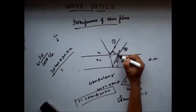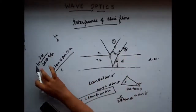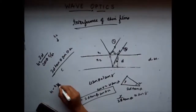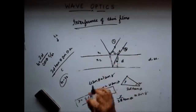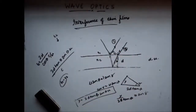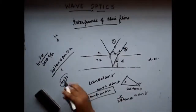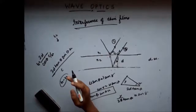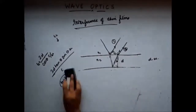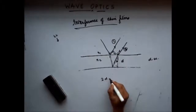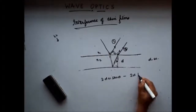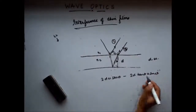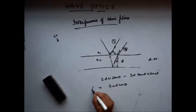The time delay is t1 minus t2, which is the difference in time taken by the two light waves. If I multiply this time with the velocity of light c, I get the path difference. So the path difference is 2d·μ·sec θ minus 2d·tan θ·μ·sin θ, which simplifies to 2μd cos θ. So this is my delta x.